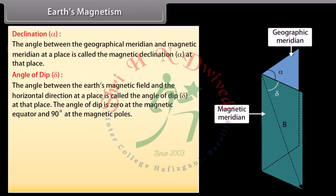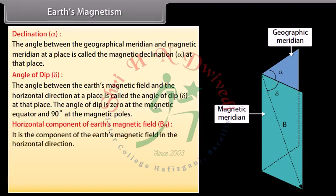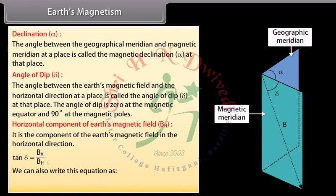The angle of dip is zero at the magnetic equator and 90 degrees at the magnetic poles. The horizontal component of Earth's magnetic field B_H is the component in the horizontal direction. tan Δ = B_V / B_H, and we can also write B = √(B_H² + B_V²).